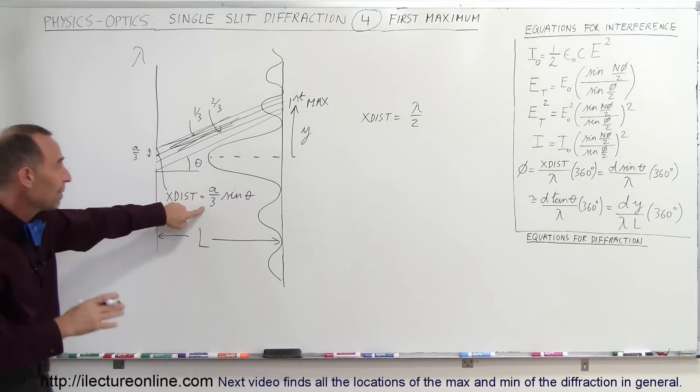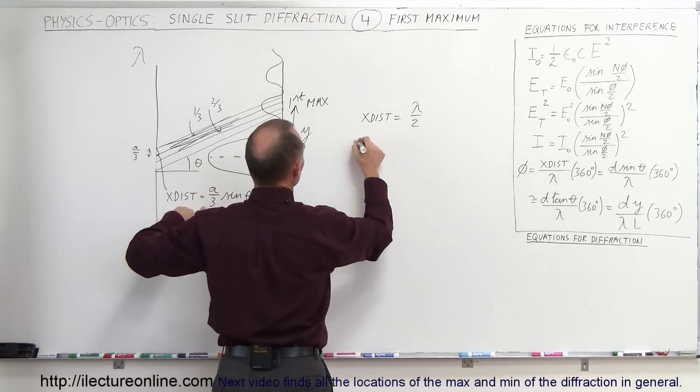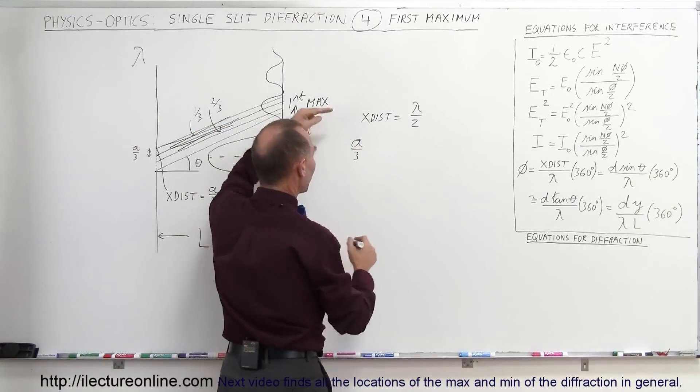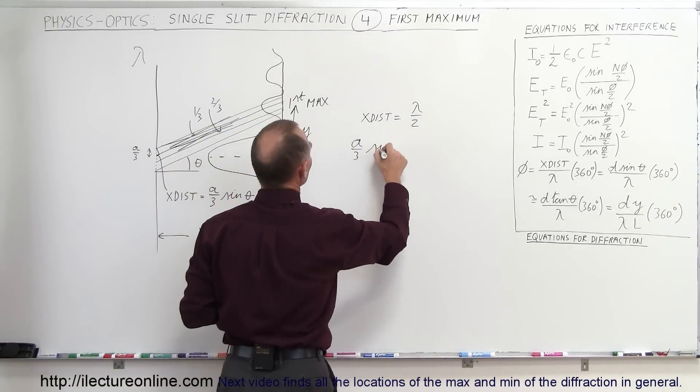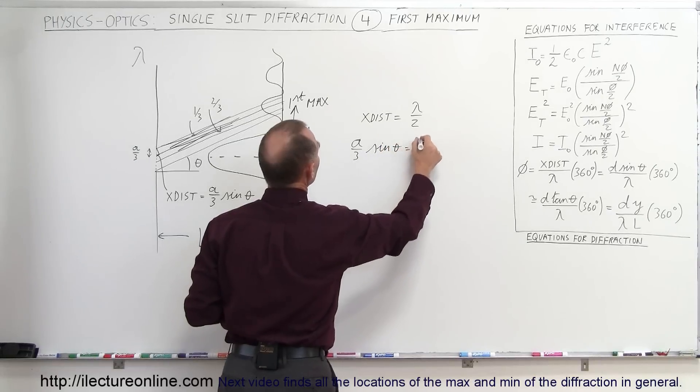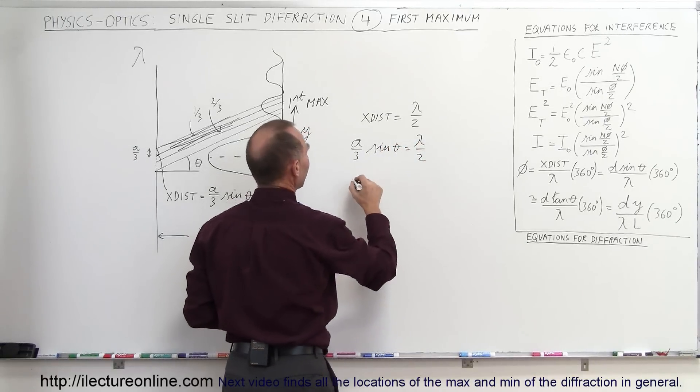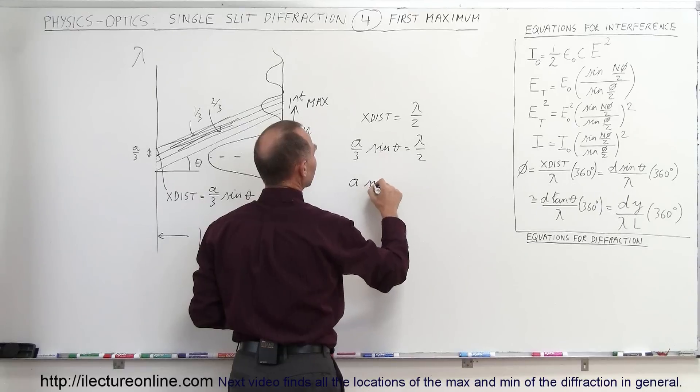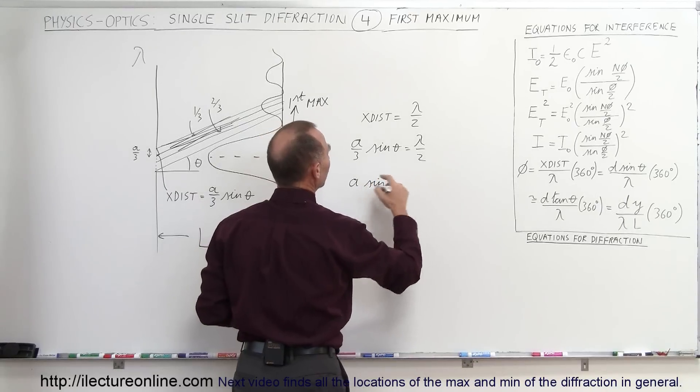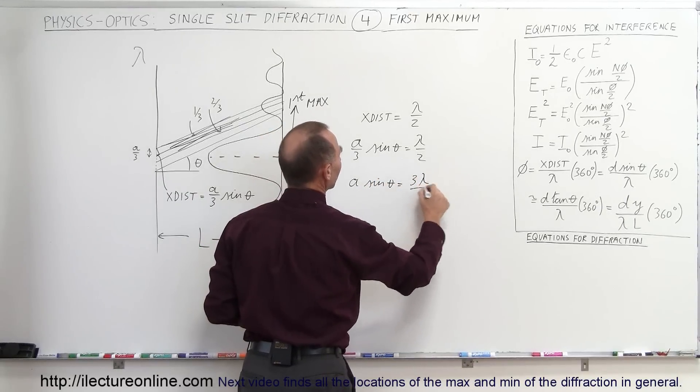If we know the requirement for the first maximum is that the extra distance traveled must be a divided by 3, one-third into the beam, times the sine of theta, and that equals lambda over 2, in such a way that a sine of theta is equal to 3 lambda divided by 2.